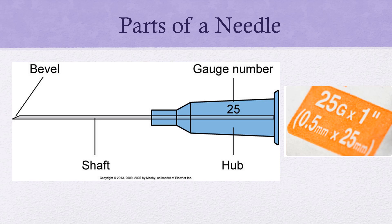Turning the bevel up will help us give our medications with less pain or discomfort. That bevel creates a narrow slit when injected into the tissue. If you use a long, sharp, narrow bevel, it's going to cause less pain for our patient, which is ultimately our goal. It also has less leaking of medication when you pull the needle back. So we want a small needle with a long bevel, because it's going to be less painful for our patient.